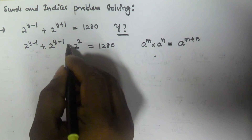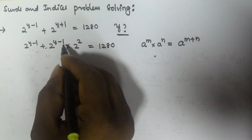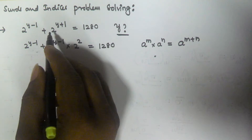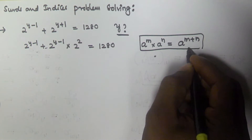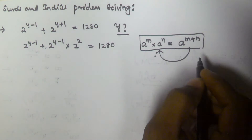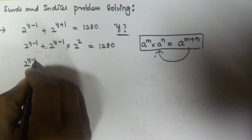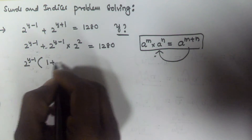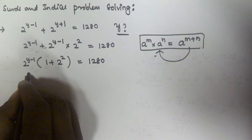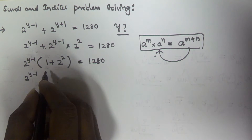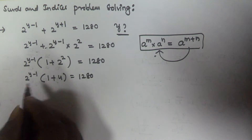So 2^(y-1) times 2^2 can also be written as 2^(y-1+2), which equals 2^(y+1). Using this formula, I converted from one form to the other. Now taking 2^(y-1) as common, we get 2^(y-1) times (1 + 2^2) equals 1280.